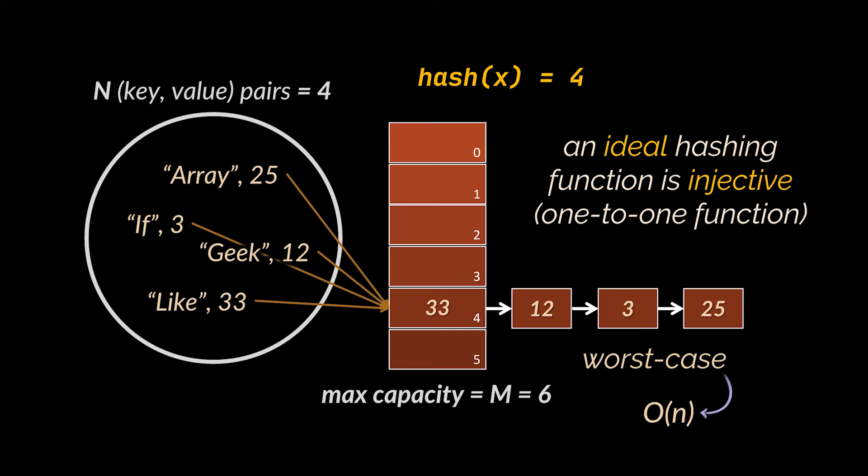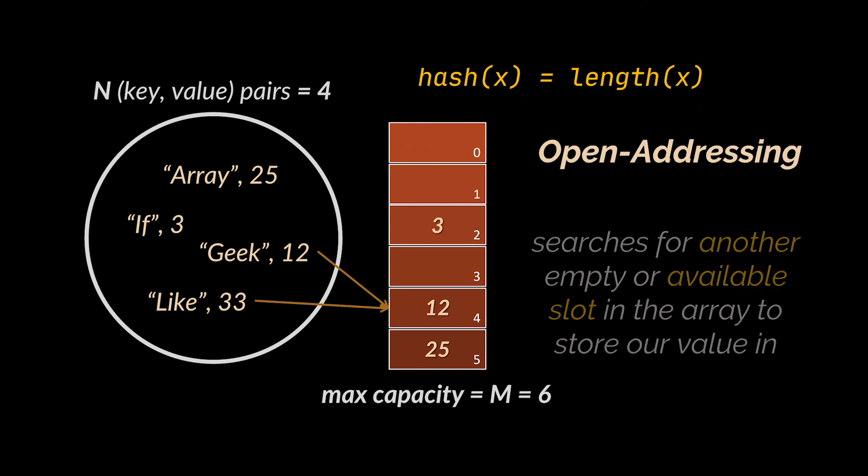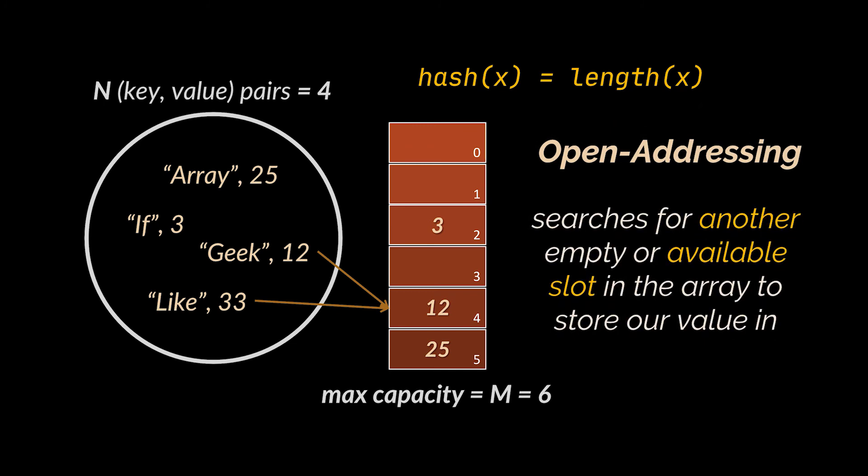We just established that chaining may reach an O(n) worst case time complexity, and because of this the second technique or method we are now going to discuss is more adopted. This collision resolution method goes by open addressing. Open addressing resolves a hash collision with probing, or in other terms it searches for another empty or available slot in the array to store our value in.